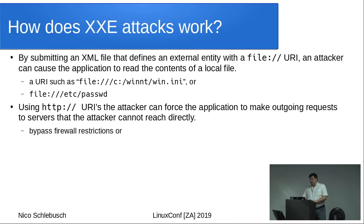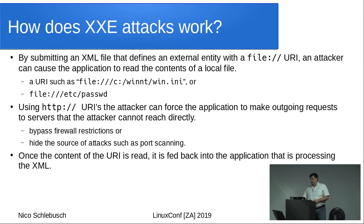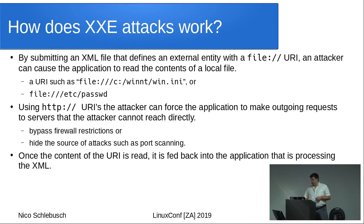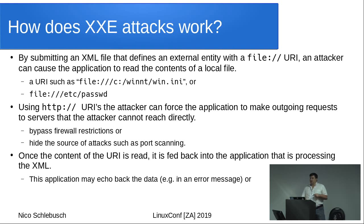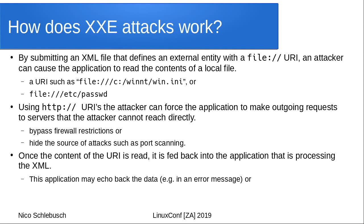You bypass firewall restrictions and hide the source. Once the XML parser has read the content of that URI, it is processed by the parser and fed back to the application. Depending on the service, it might echo the data back to you, or you might see results in error messages. If the service doesn't return the content directly, you can send that data to another command and control server where you can see what you actually accessed through the attack.